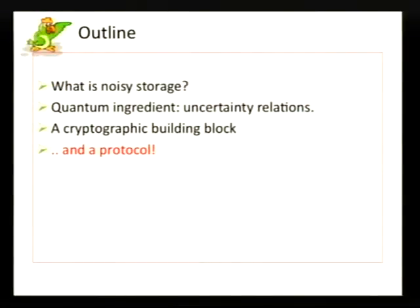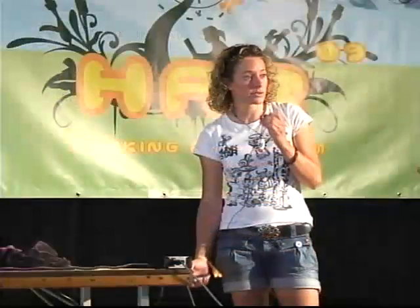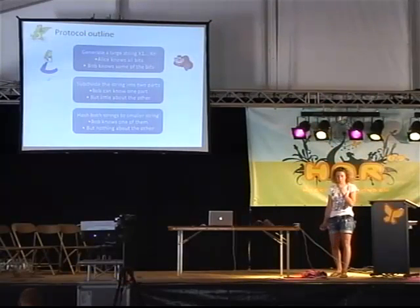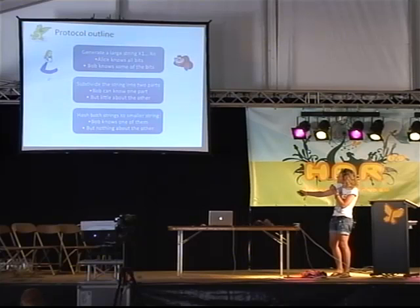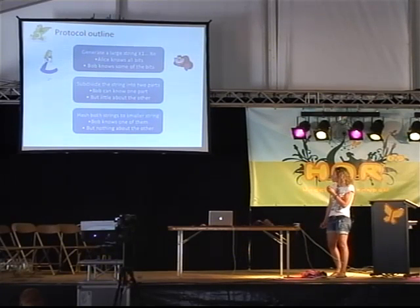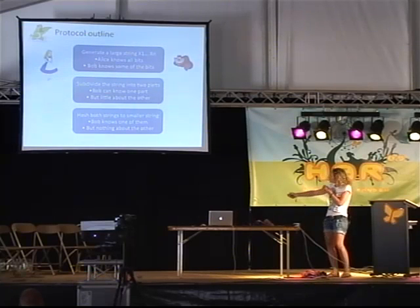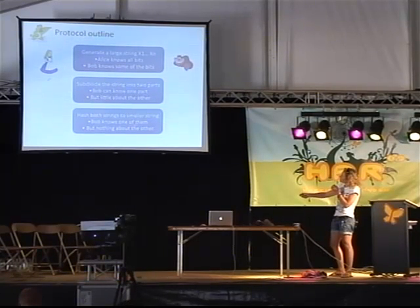Let me give you a very rough idea about how a protocol for such a thing can be built using quantum bits. There are three main steps. First, we're going to generate a very long string shared by Alice and Bob such that Alice knows all of the bits, but Bob only knows some of them and not too many. Then we'll split the string into two parts in such a way that Bob knows one of the two parts, but not the other — though he may still know a little bit about the other. In the final step, we'll shrink the strings down to something much smaller, so that Bob knows one of them but really knows nothing about the other.